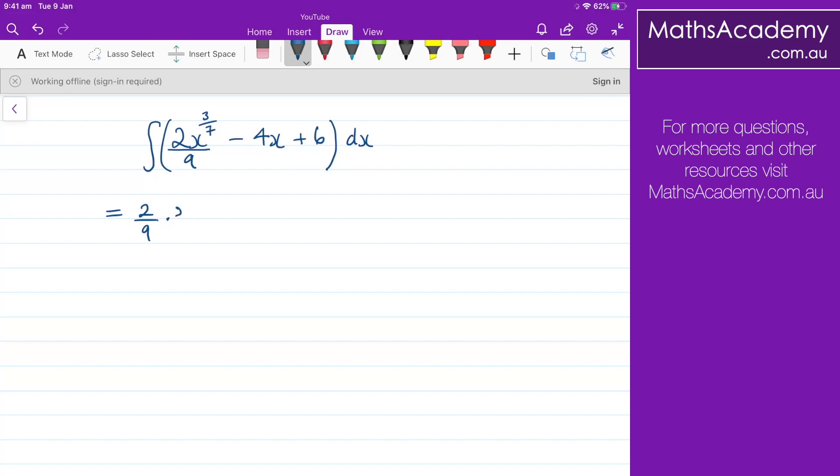To get x to the power of 10 over 7, then we divide by that new power, so 10 over 7.